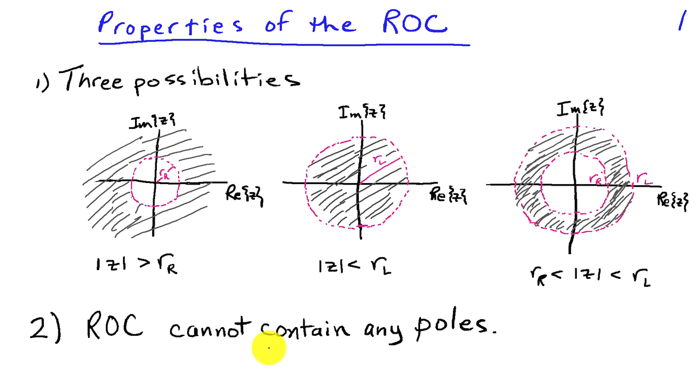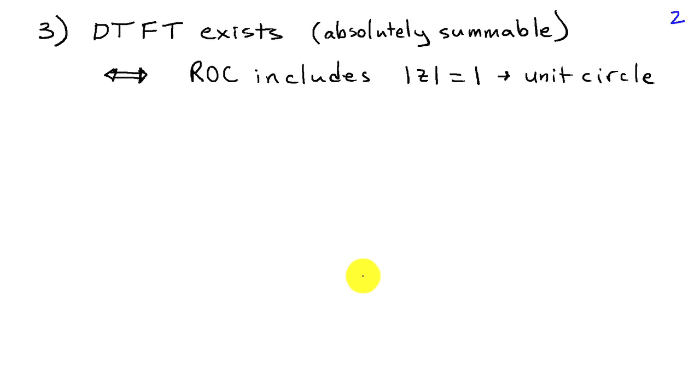Of course, the ROC cannot contain any poles because the definition of a pole is that x of z equals infinity at the pole, which corresponds to the Z-transform not existing.